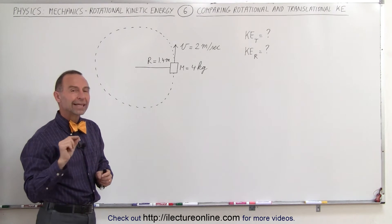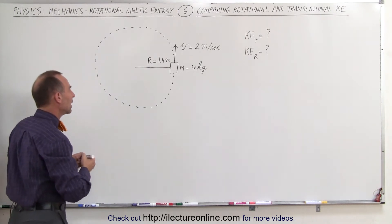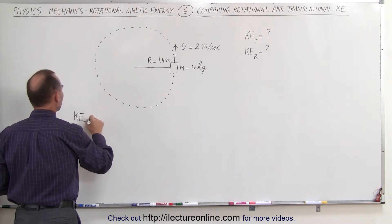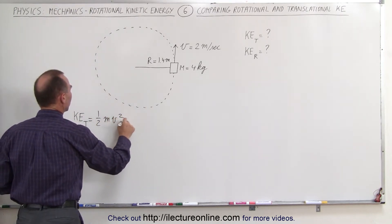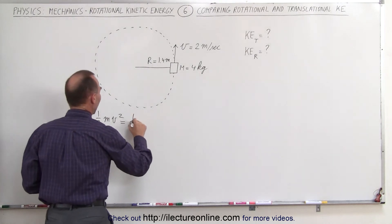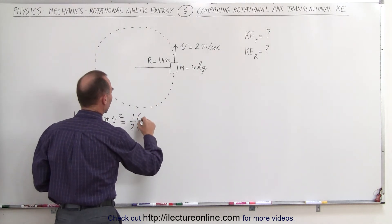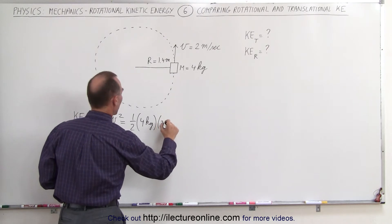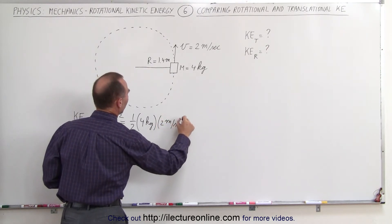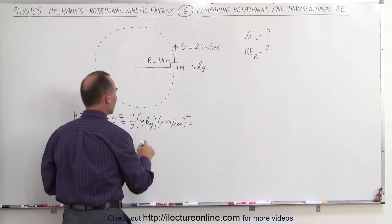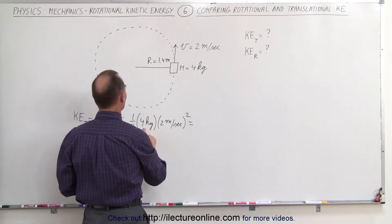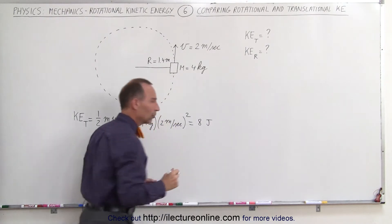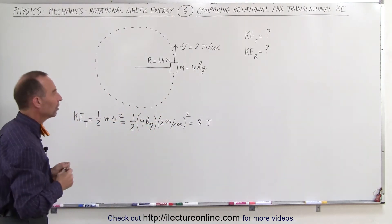So let's calculate the kinetic energy in both ways and see what we get. First, the kinetic energy translational, which is equal to one half mv squared. This would be equal to one half times the mass of the object, which is 4 kilograms, times the velocity, 2 meters per second, quantity squared. And that would be 4 times 4, which is 16, divided by 2, which is 8 joules. So 8 joules is the translational kinetic energy.